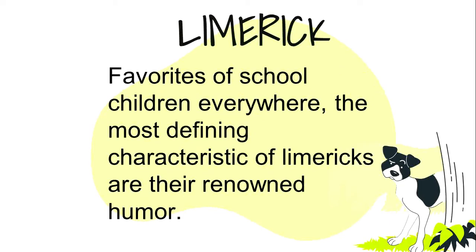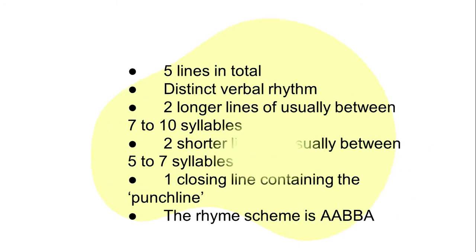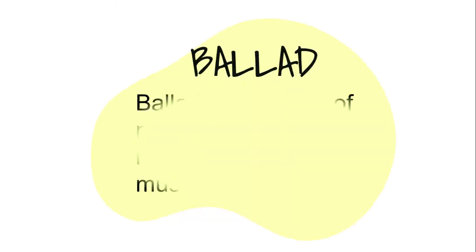Limericks — favourites of school children everywhere. The most defining characteristic of limericks is their renowned humor. Given their well-deserved reputation for being funny and on occasion crude, it's easy to overlook the fact that beneath the laughs lies quite a tightly structured verse form. It has five lines in total, a distinct verbal rhythm, two longer lines of usually between seven to ten syllables, two shorter lines of usually between five to seven syllables, one closing line containing the punchline, and the rhyme scheme is AABBA.